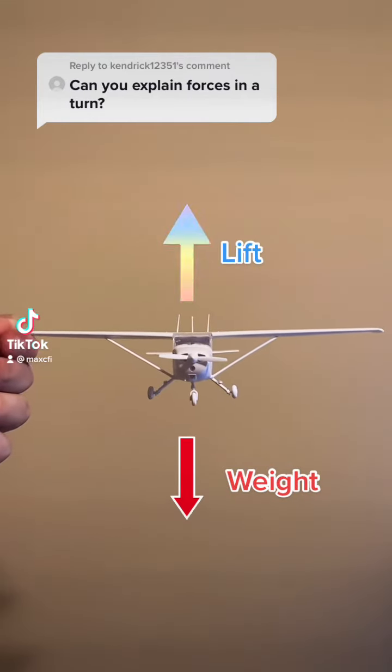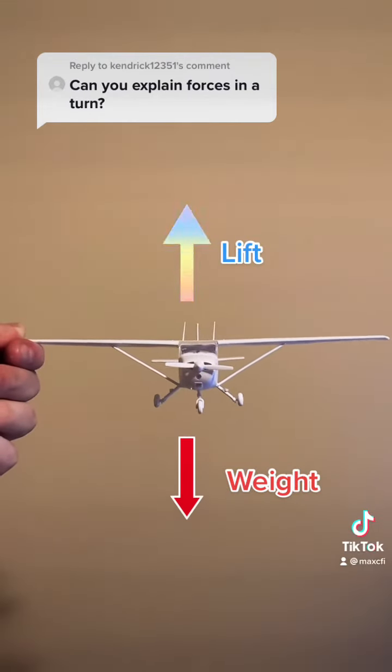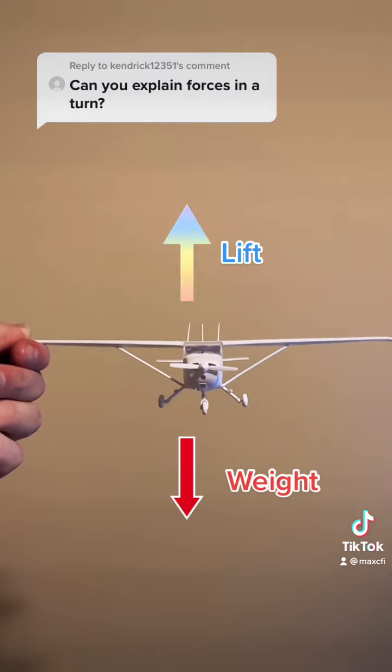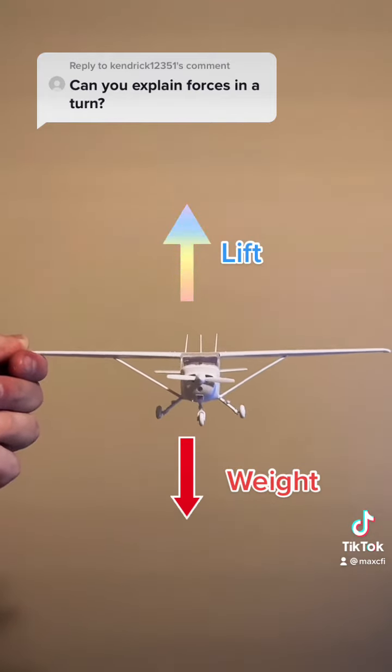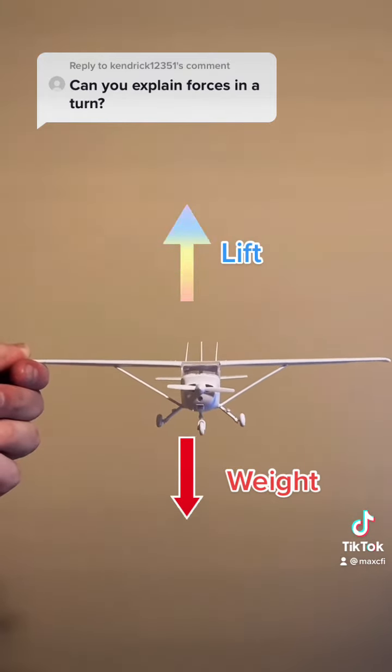An airplane flying straight and level has the force of lift holding it up and weight pulling it down. With these two forces equal and opposite in direction, the airplane continues along in straight and level flight.